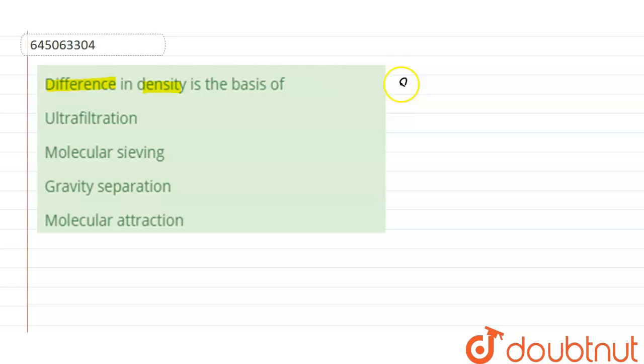So let's start. Difference in density is the basis of gravity separation, also called hydraulic washing.